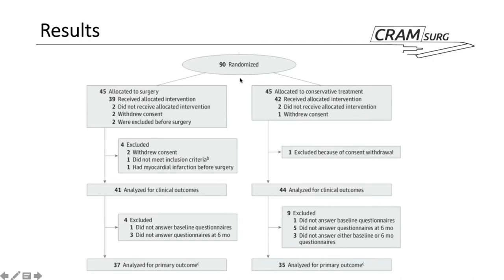Looking at the CONSORT diagram: 90 patients were randomised, 45 in each arm. After exclusions, 41 were analysed in the surgical group and 44 in the conservative group for clinical outcomes. With further exclusions, only 37 were analysed for the primary outcome in the surgical group and 35 in the conservative group.